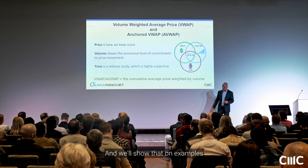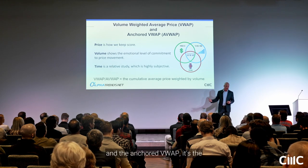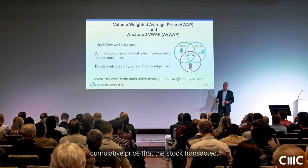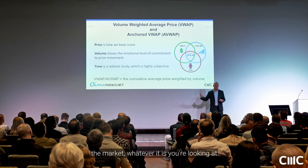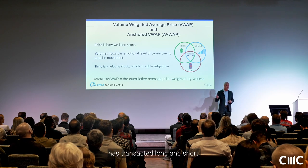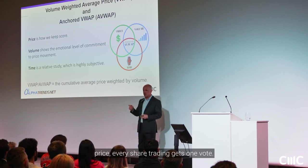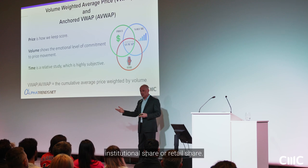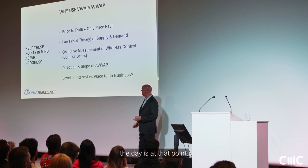We'll show that on examples across all different timeframes. The volume-weighted average price and the anchored VWAP represent the cumulative price at which the stock — or whatever market you're looking at — has transacted, long and short. Every single trade, with its volume and average price, counts equally. Every share traded gets one vote — it doesn't matter whether it's an institutional share or a retail share. It's all mixed in. It's simply the average price for the period at that point.